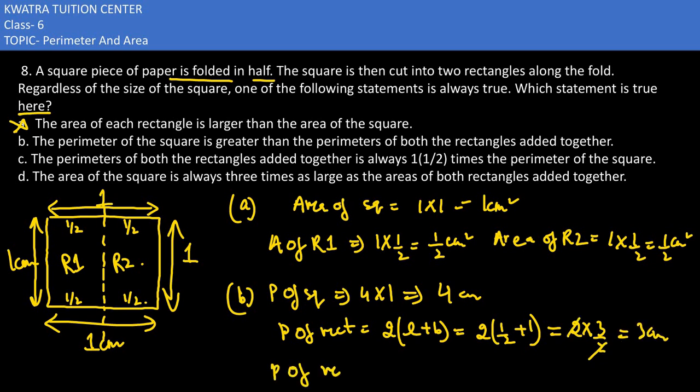Now in this way, you would be finding the perimeter of rectangle 2. 2 into L plus B. The length is half and breadth is 1. Same 3 cm would be there. So if we add the perimeter of rectangles, we can understand that the square is not greater. This is coming 6 and this is coming 4. So statement B is wrong as well.